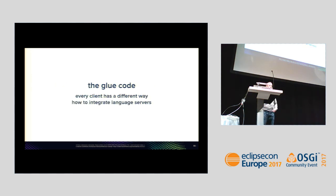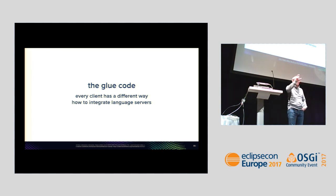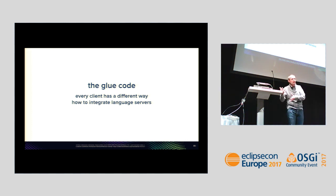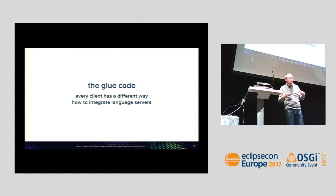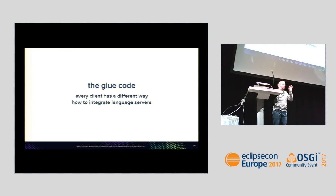You also have to write a little bit of glue code — I hate writing glue code. It's not a big deal, just a small piece of code, but you have to write it to start up the language server on the client side. There's no unified format — in Eclipse you implement an extension point, in VS Code you implement a VS Code extension, in Atom there's another format. You have to maintain this for every client.